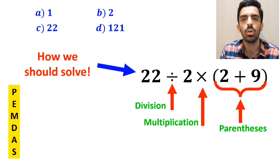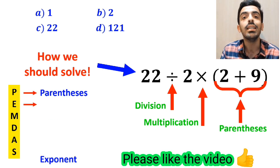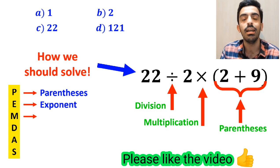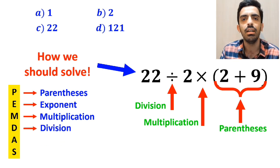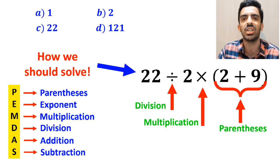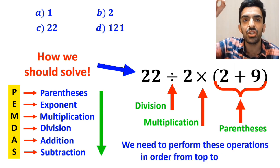To solve this expression, we need to use the PEMDAS rule. In this rule, P stands for parenthesis, E stands for exponent, M stands for multiplication, D stands for division, A stands for addition, and S stands for subtraction. We need to perform these operations in order from top to bottom.